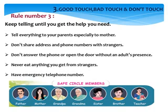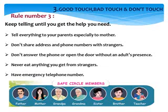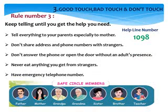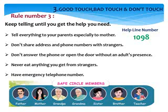You can inform your safe circle members: father, mother, grandpa, grandma, sister, brother, and your teacher — not your friends. Immediately inform your family members and your teacher. The helpline number is 1098. You can call the helpline number 1098.